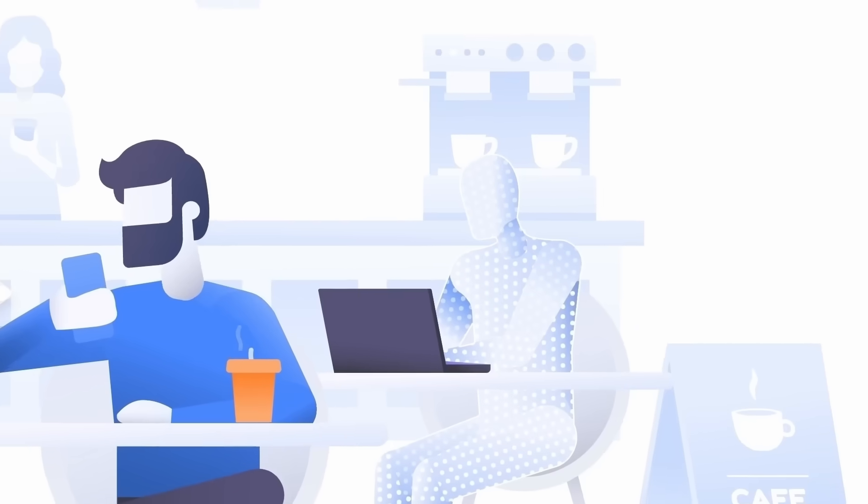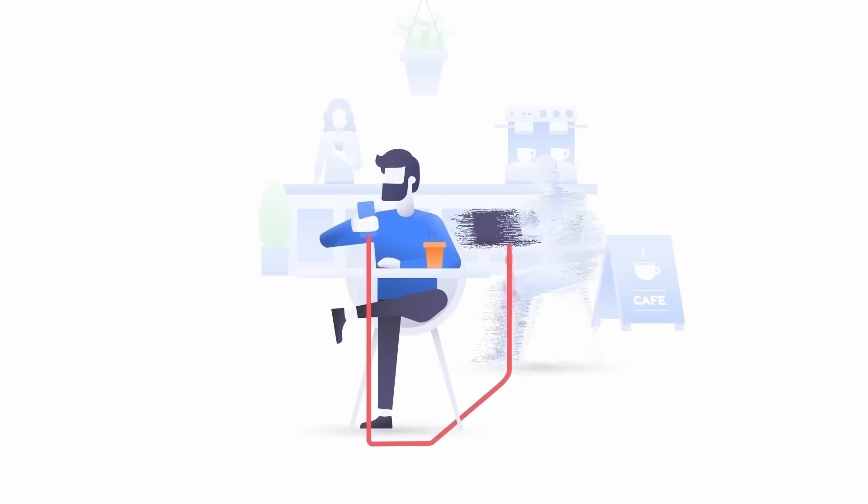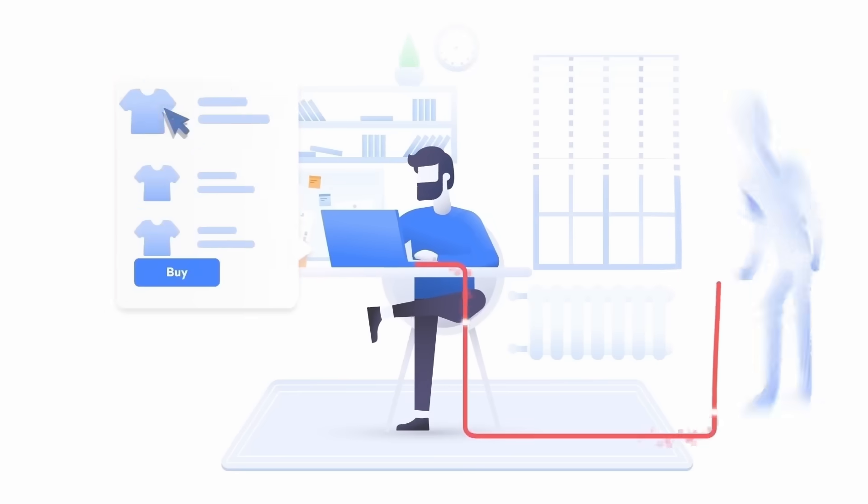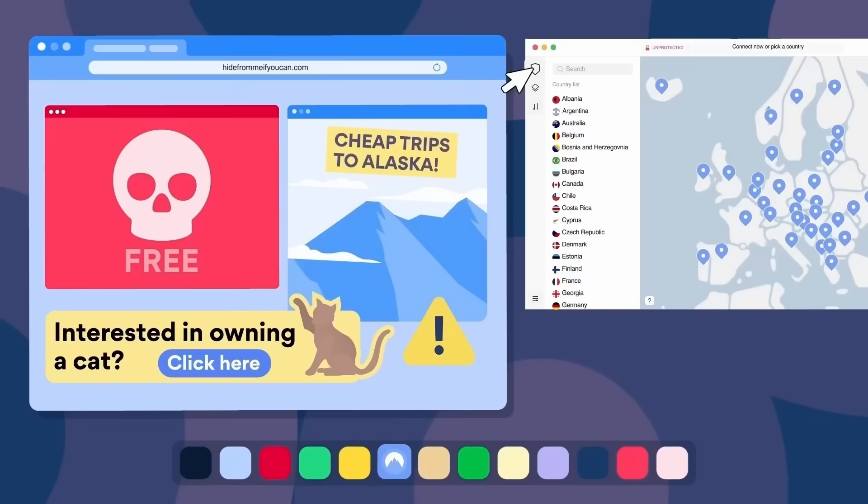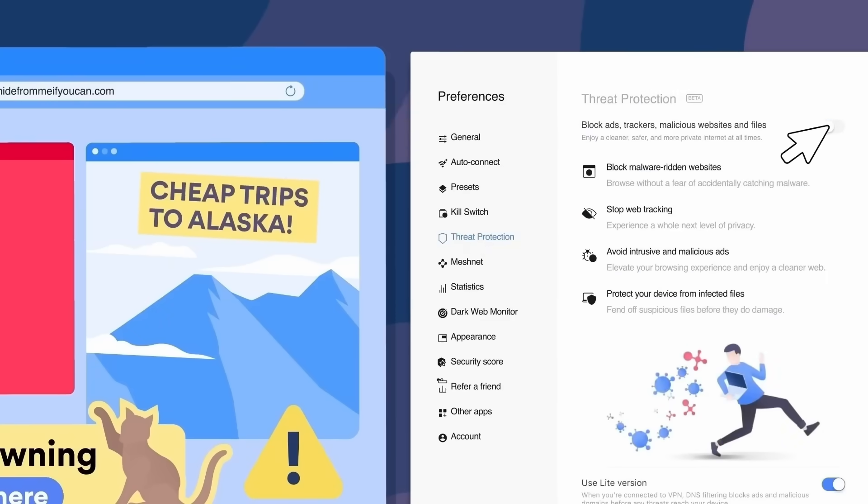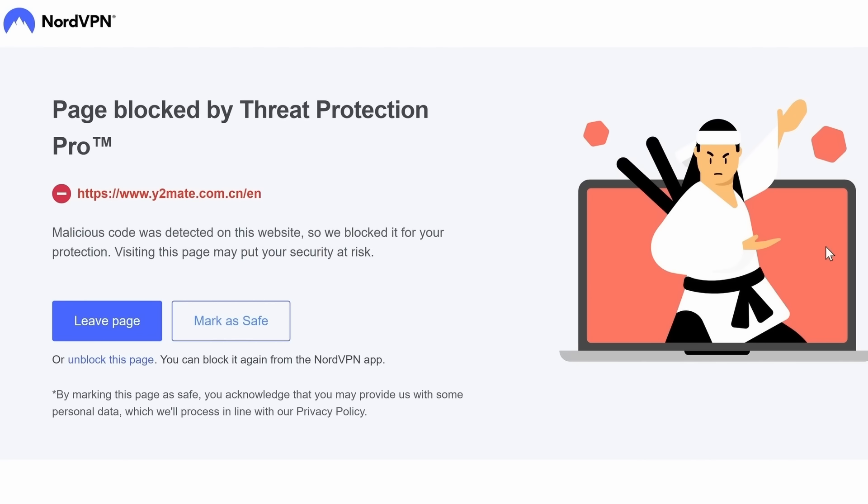NordVPN is an app that makes your internet connection ultra-secure. You install it on your phone or laptop and use it to create a safe connection. With NordVPN, no one can spy on your data or track your whereabouts. And it also comes with a threat protection that keeps you safe from malware, trackers and malicious ads. It doesn't just protect your privacy, it also makes your life easier.